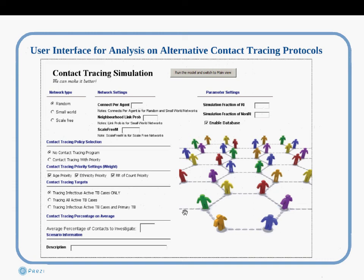The class project built an interface for running these models — and most importantly, built the model behind the interface. The interface allowed varying assumptions about network type. It allows no contact tracing or contact tracing with prioritization along several different lines, and then tracing different sets of individuals.